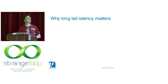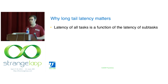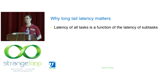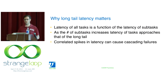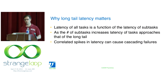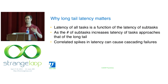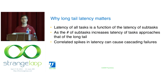Why should you care about long-tail latency if your average and throughput are good? The latency of your user-visible tasks is a function of the latency of all the subtasks. As the number of subtasks increases, task latency approaches that of the long tail — you rapidly approach worst-case latency as you add subtasks with outliers. Also, correlated spikes in latency can cause cascading failures, because outliers are typically correlated across multiple unrelated things caused by some shared contended or buggy resource.